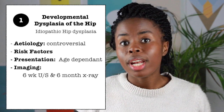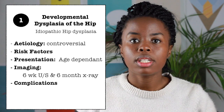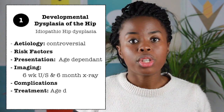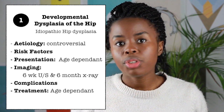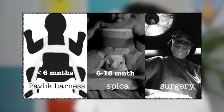DDH rarely complicates — complications are usually due to treatment. Patients are treated according to their age. Children less than 6 months are treated in a Pavlik harness. Children greater than 6 months but less than 18 months are treated with a spica cast as well as a closed reduction. Children greater than 18 months are treated surgically.